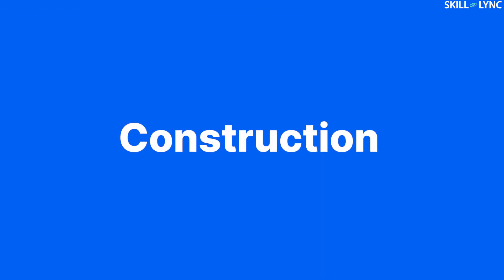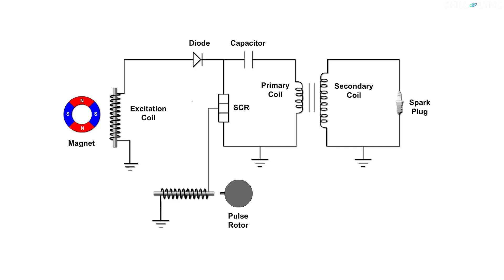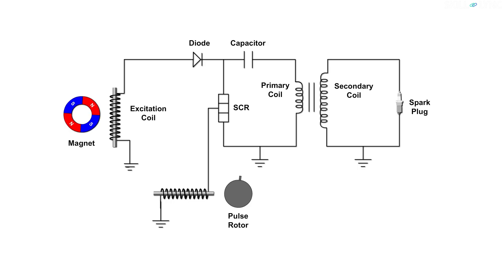Now let us see how these components together make up the CDI system. The excitation coil is connected with the diode and the capacitor in series. One end of the primary winding is connected to the capacitor and the other end is connected with the SCR. The SCR is in turn connected with the triggering unit and the capacitor. The secondary coil is connected with the spark plug. When the magnet rotates, an EMF is induced in the exciting coil, and current flows to the primary coil through the diode and the capacitor, charging the capacitor.